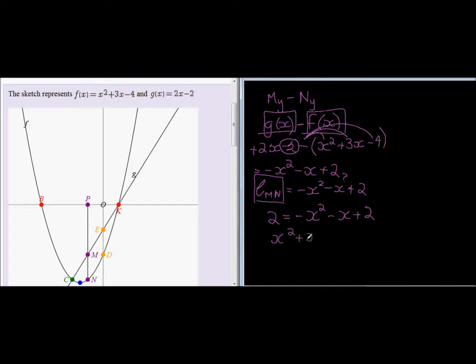And now I just need to solve to find for which value is that length equal to 2. So I get x squared plus x, and the 2s cancel to give me 0. So I find the distance between them will be 2 when x - let me just factorize - x plus 1 is equal to 0, so when x is equal to 0 or when x is equal to negative 1.